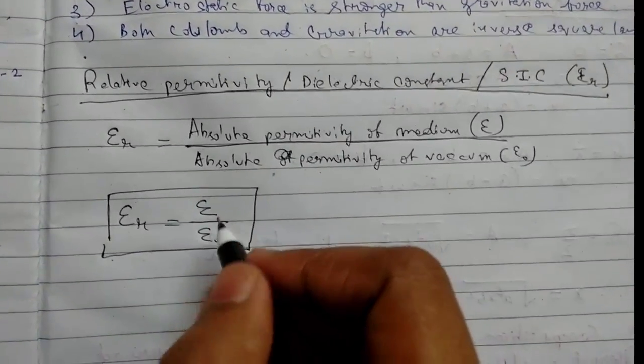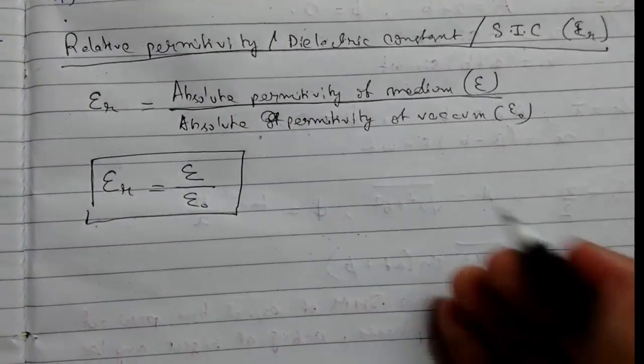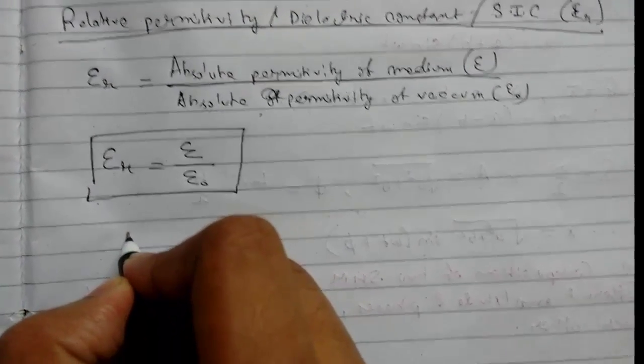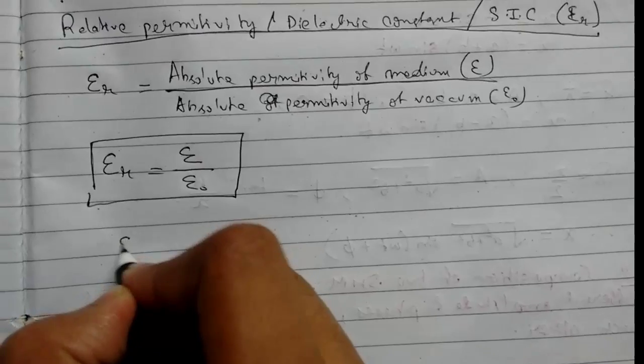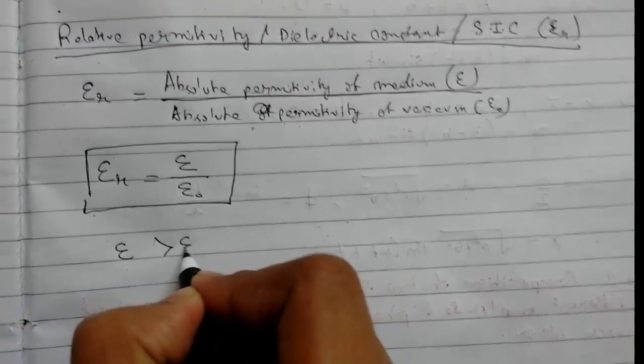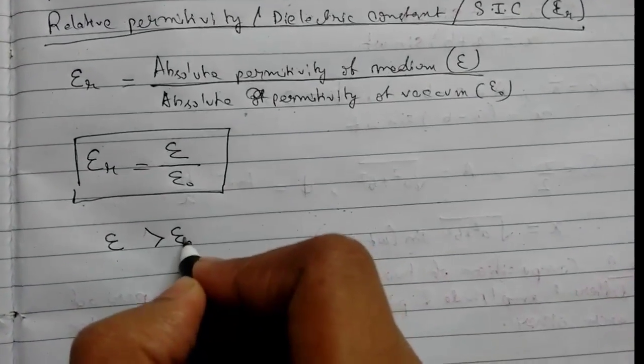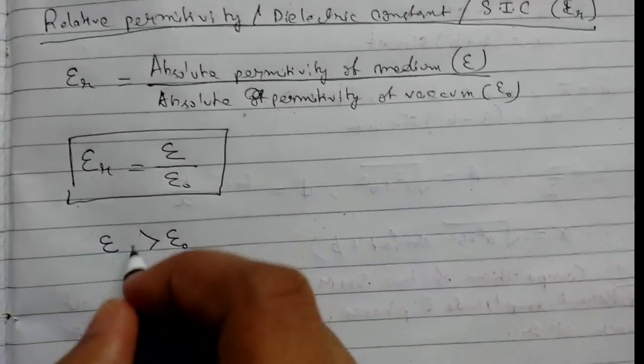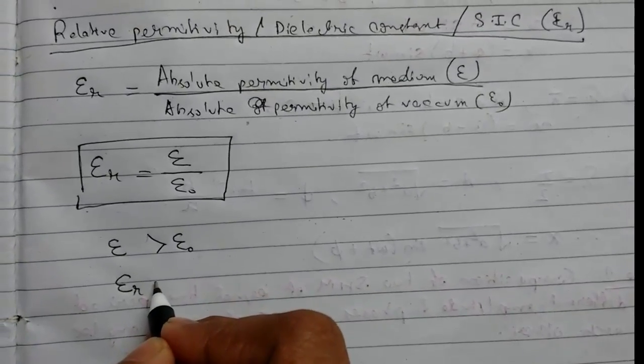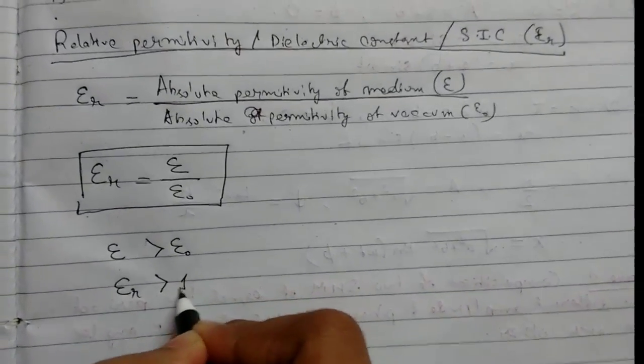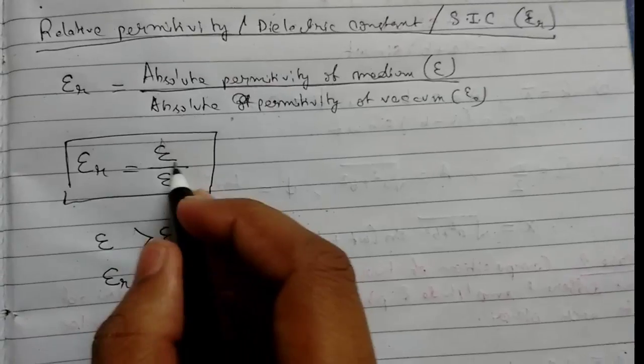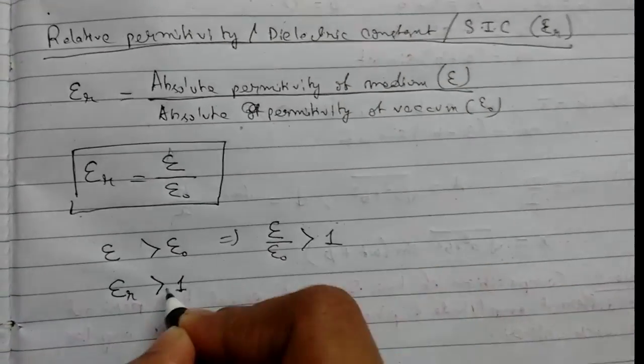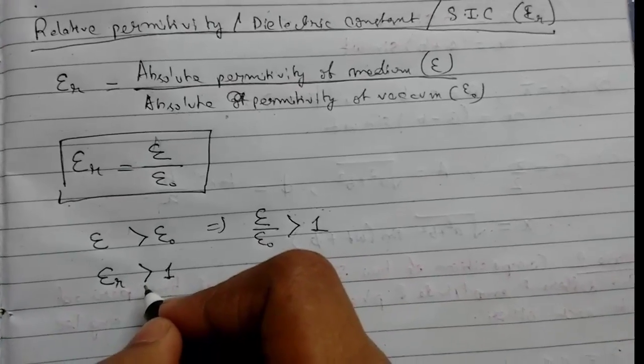This is a dimensionless quantity because it is a ratio. Epsilon will always be greater than epsilon naught because air is the lightest medium and other media will be denser. Therefore, epsilon R is always greater than one.